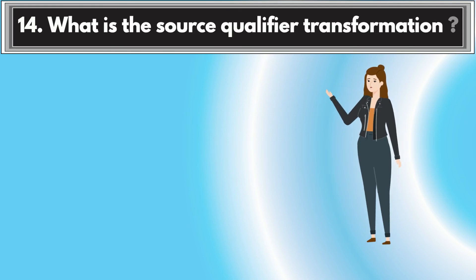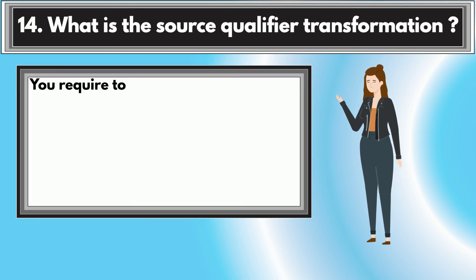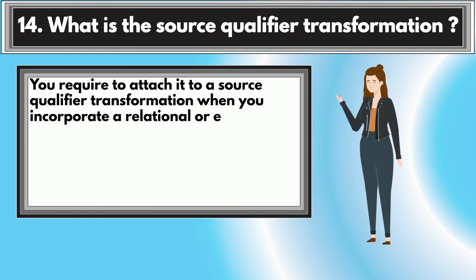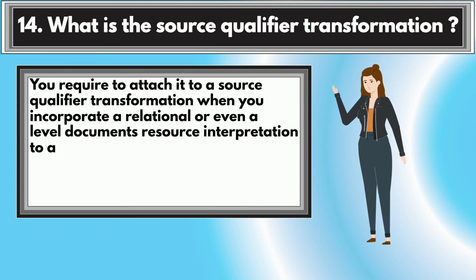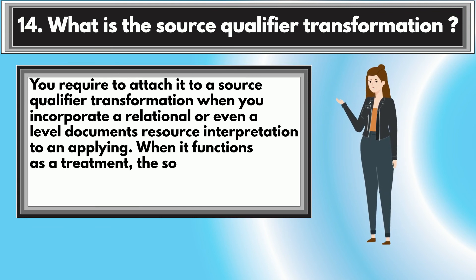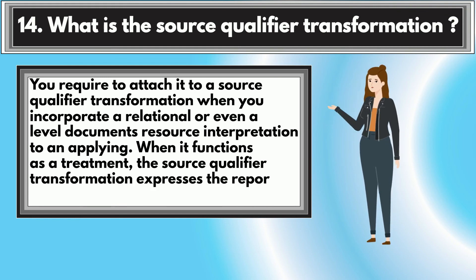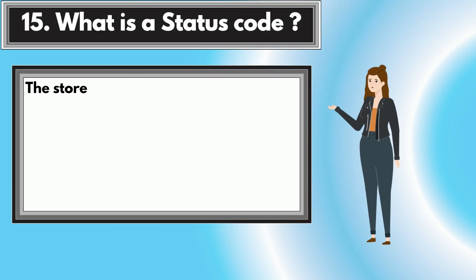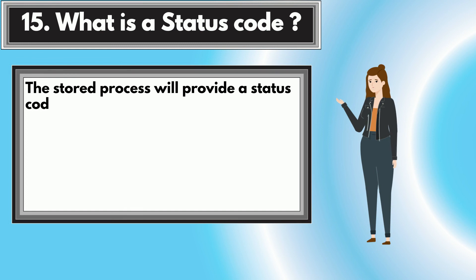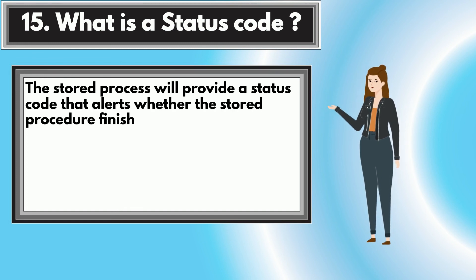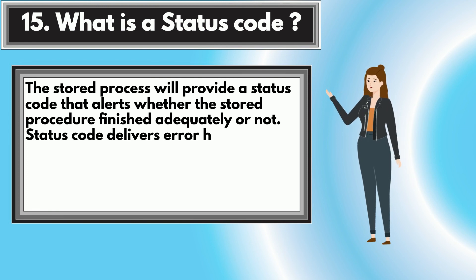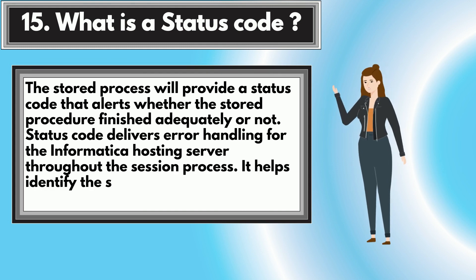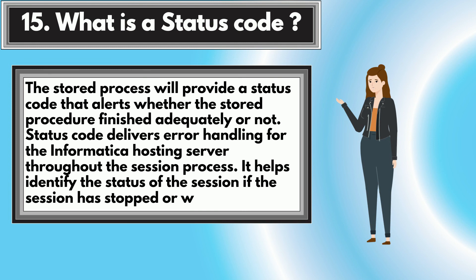Question 14: What is the Source Qualifier Transformation? You need to attach it to a Source Qualifier Transformation when you incorporate a relational or flat file source definition into a mapping. The Source Qualifier Transformation expresses the records that the Informatica server reads. Question 15: What is a Status Code? The stored procedure will provide a status code that indicates whether the stored procedure finished successfully or not. Status code provides error handling for the Informatica server throughout the session process, and helps identify the status of the session — whether it has stopped or is still working.